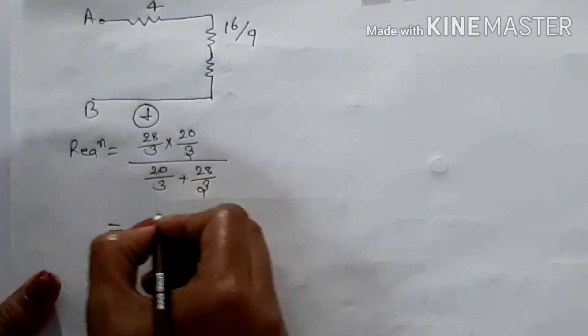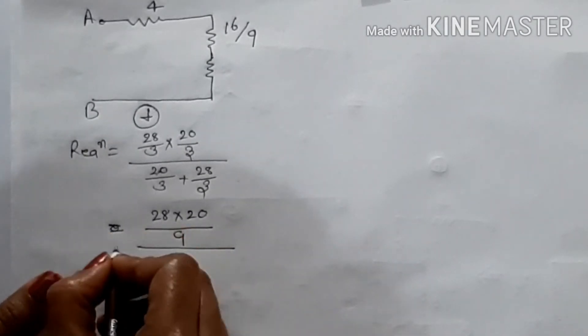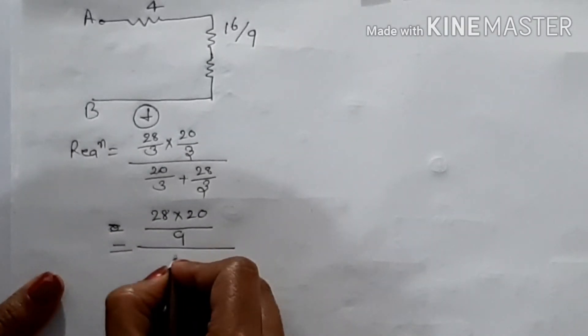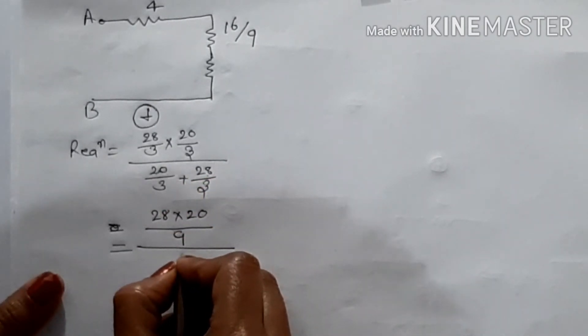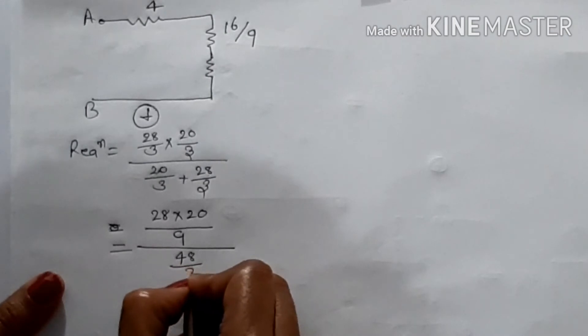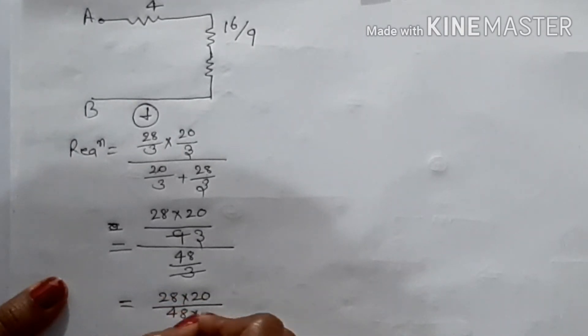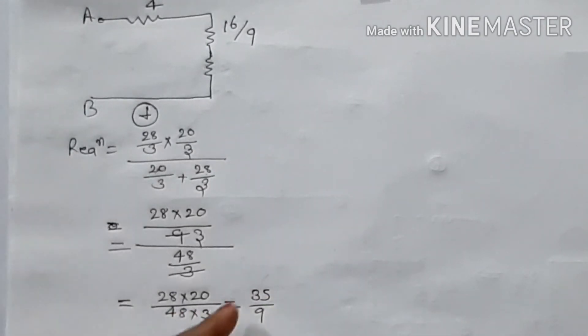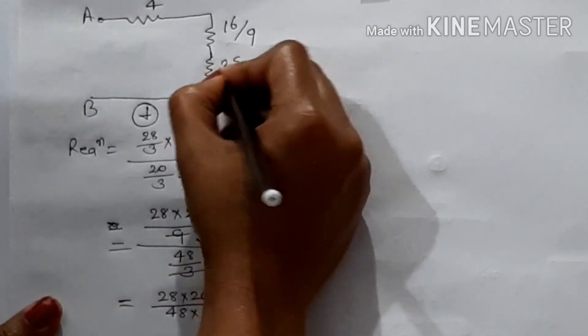28 into 20 divided by 20 plus 28 that means 48 upon 3. Then 28 into 20 upon 48 into 3. If we calculate this, it is 35 upon 9. Then this is 35 upon 9.